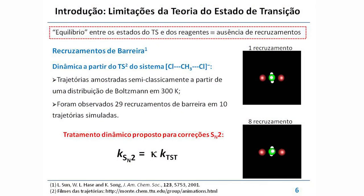Aqui tem um exemplo em que a teoria do estado de transição falha, porque aquela condição do equilíbrio entre o estado de transição e os reagentes é equivalente, do ponto de vista dinâmico, ao fato de que não pode haver recruzamento. O que isso significa? Uma vez que o estado de transição é formado, ele deve levar ao produto — não pode voltar aos reagentes.